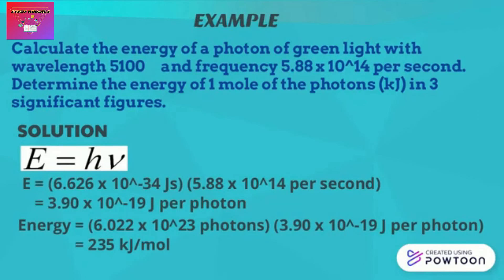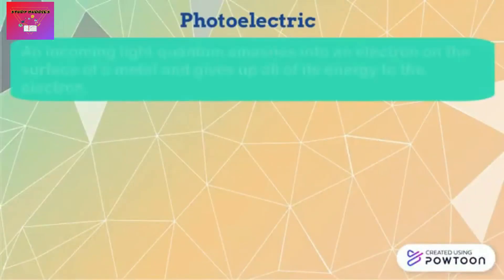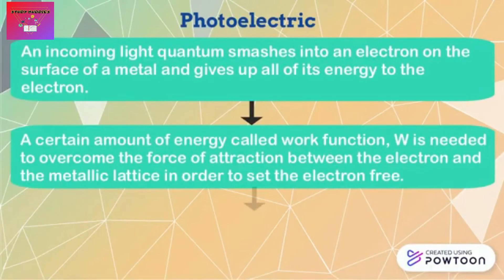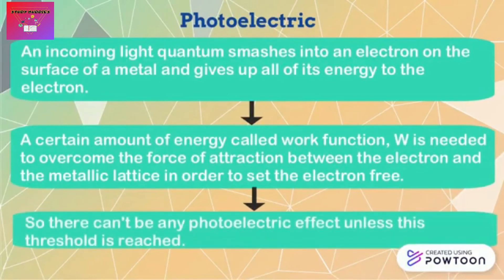Let's study the process of photoelectric effect. An incoming light quantum smashes into an electron on the surface of a metal and gives up all of its energy to the electron. A certain amount of energy called work function is needed to overcome the force of attraction between the electron and the metallic lattice in order to set the electrons free. There can't be any photoelectric effect unless this threshold is reached.